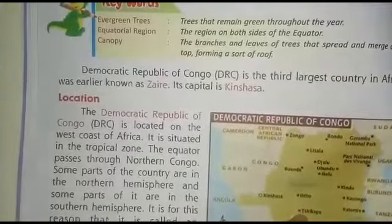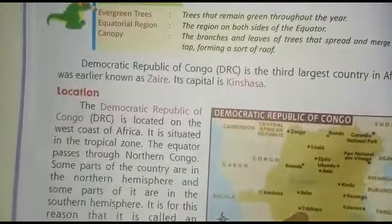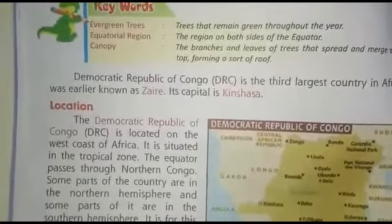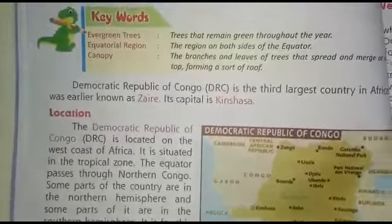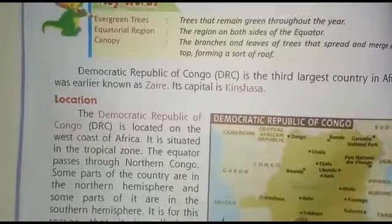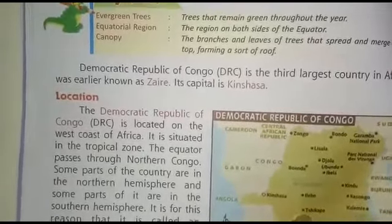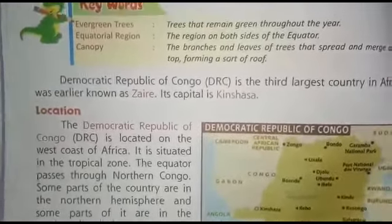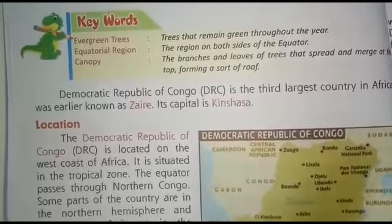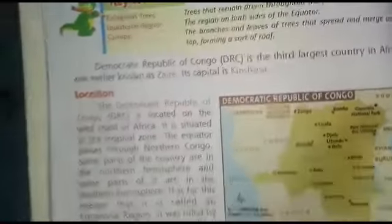The Democratic Republic of Congo is located in the west of Africa. It is situated in the tropical zone. The equator passes through the northern Congo, so some parts of the country are in the northern hemisphere and some parts are in the southern hemisphere.